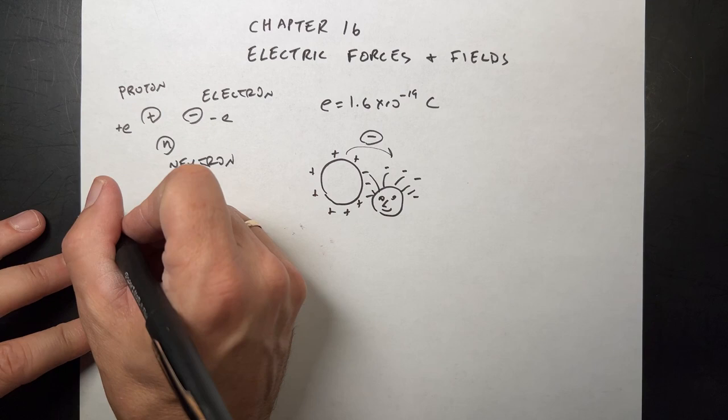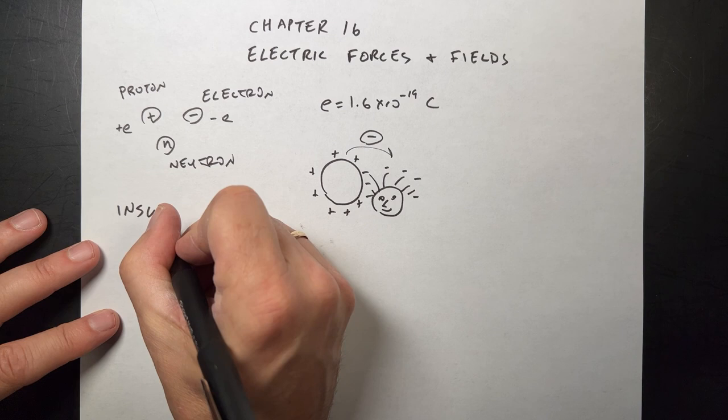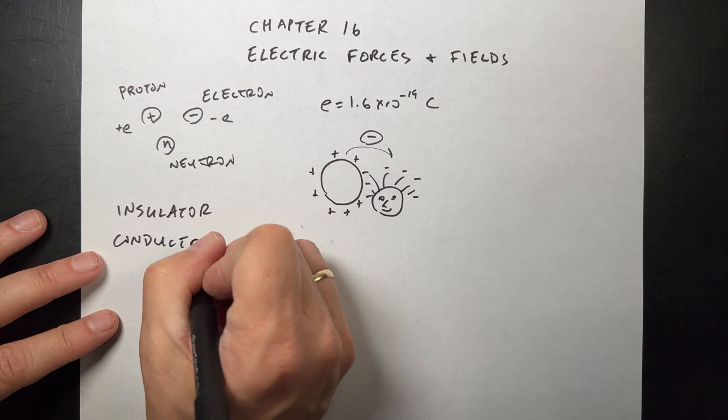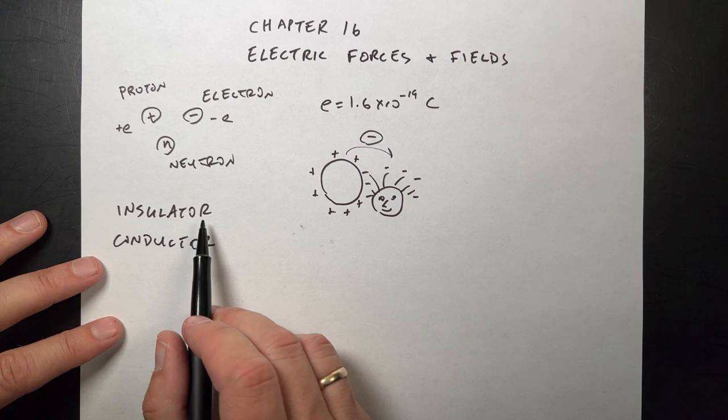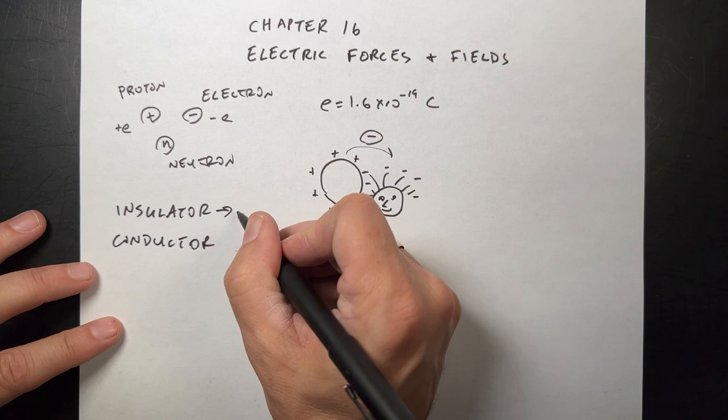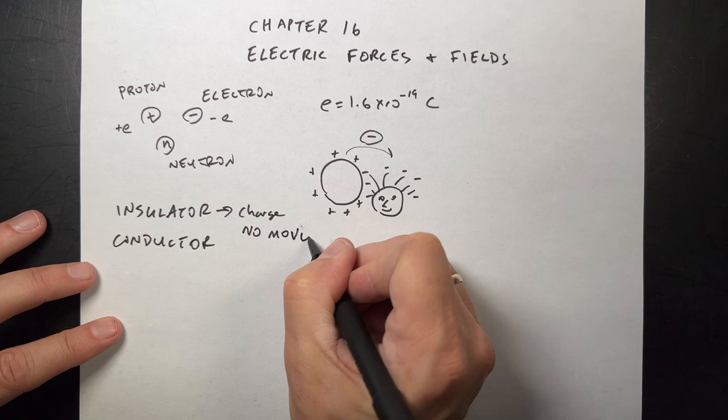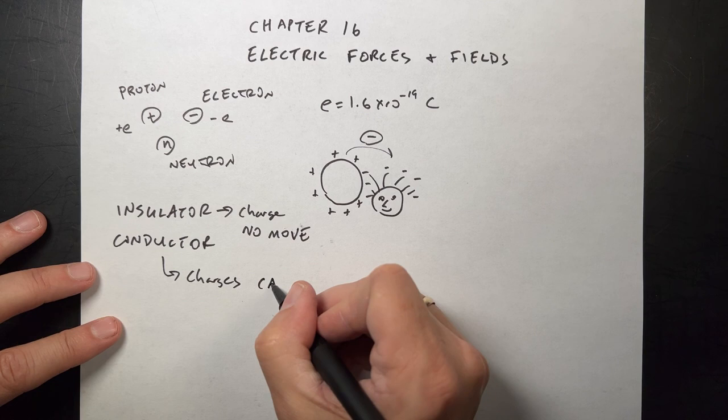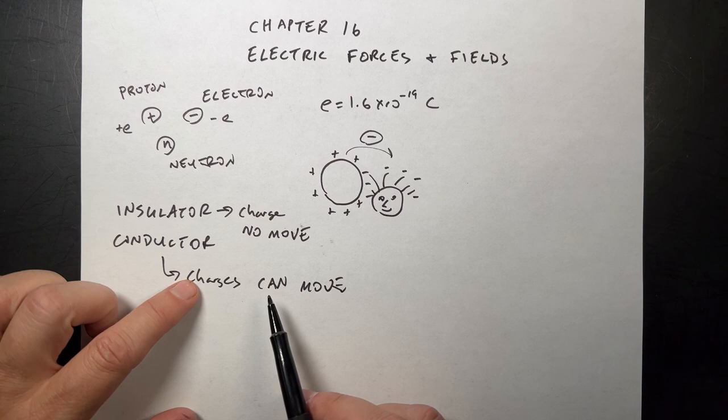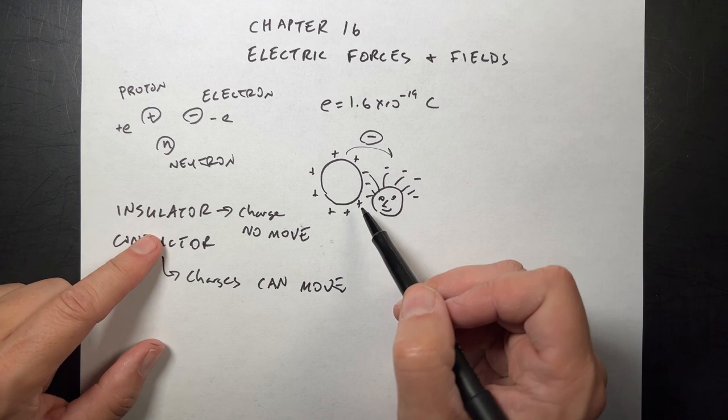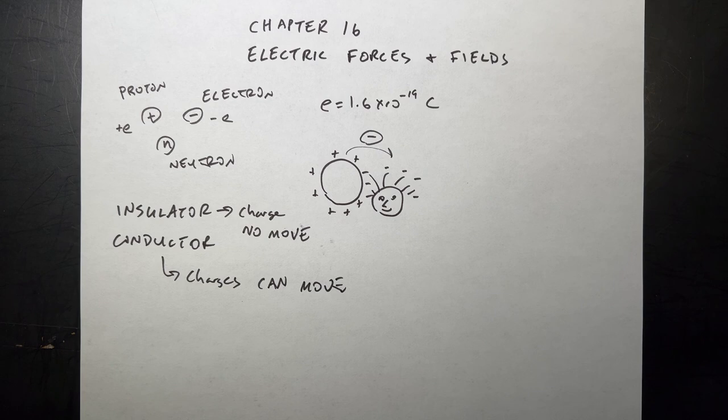I want to point out one other important thing about charges, and that's the difference in materials for an insulator and a conductor. An insulator is materials like rubber, wood, glass, plastic. In these cases, charges don't easily move. No movie. And in a conductor, charges can move. This means that in a conductor, any excess charge is going to be on the surface. Whereas in an insulator, you can have the charge spread throughout the whole thing.